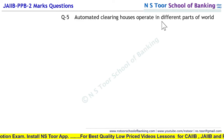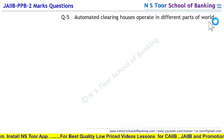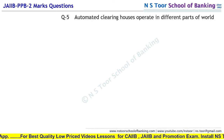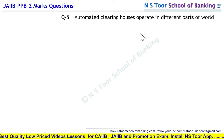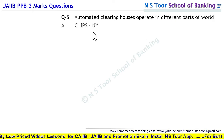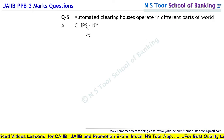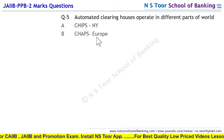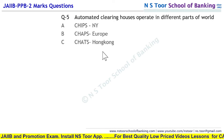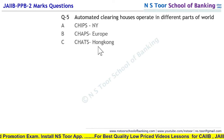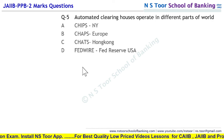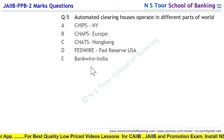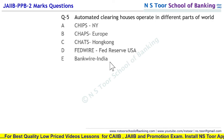Question number 5: Automated clearing houses operate in different parts of the world. CHIPS New York mein operate karta hai. CHAPS Europe mein operate karta hai. CHATS Hong Kong mein operate karta hai. Fedwire Fed Reserve USA ka hai. Bankwire India ka hai. Ye different automated clearing houses hain.